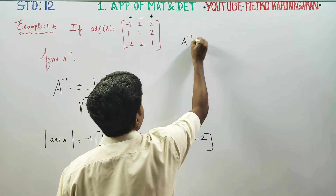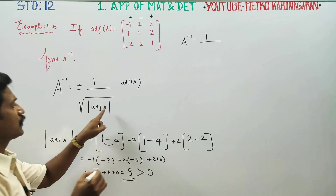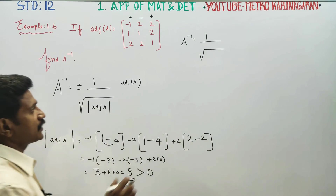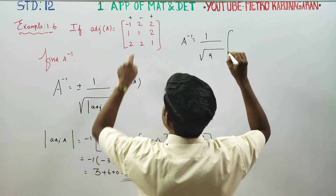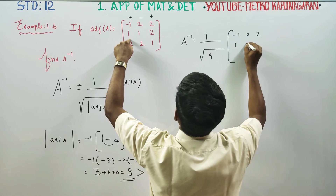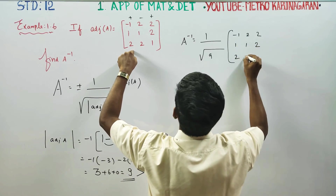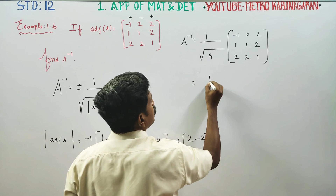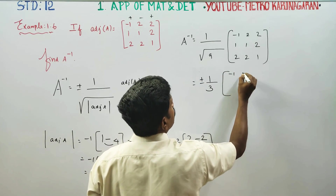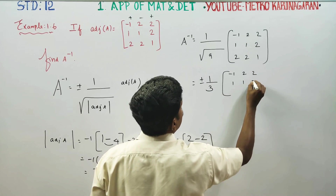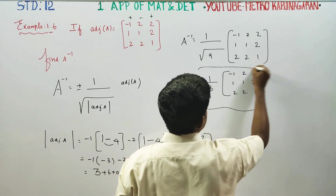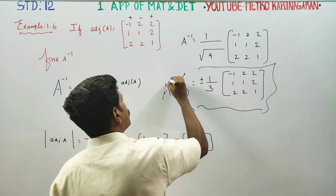Finally, we will conclude the sum. A-inverse is equal to 1 by square root of determinant of adjoint A, into adjoint A. The determinant is 9, and the adjoint is the given ready-made matrix: minus 1, 2, 1; 1, 2, 1. Square root of 9 is 3. So A-inverse equals plus or minus 1 over 3 times the adjoint matrix: minus 1, 2, 1; 1, 2, 1. This is your final answer. This is your A-inverse. Thank you.